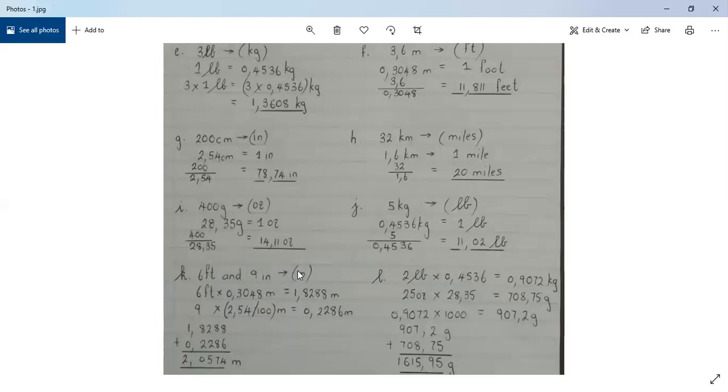And then your final solution in meters, you add this 1.8288 to 0.2286. And your final answer in meters is 2.0574 meters. So that is a conversion from feet and inches to meters.